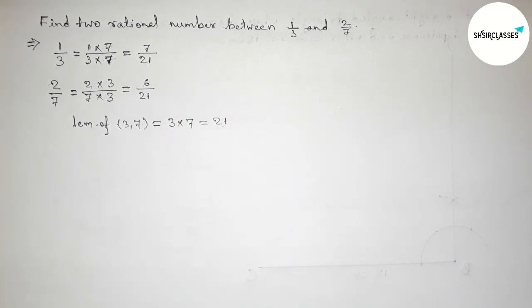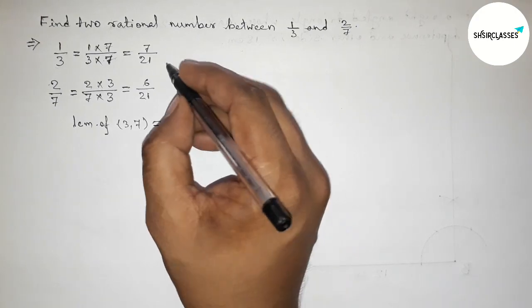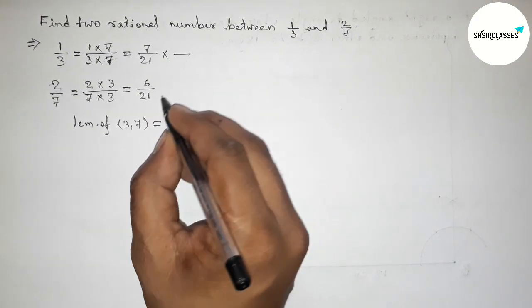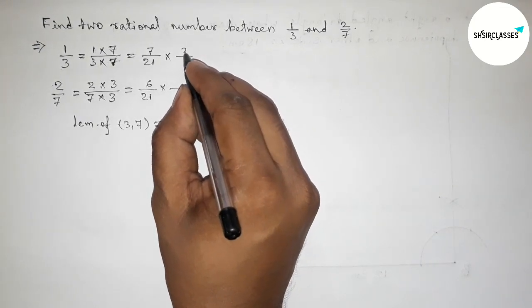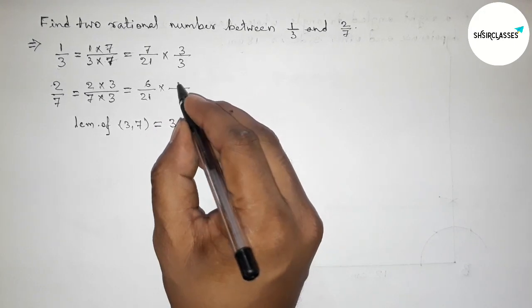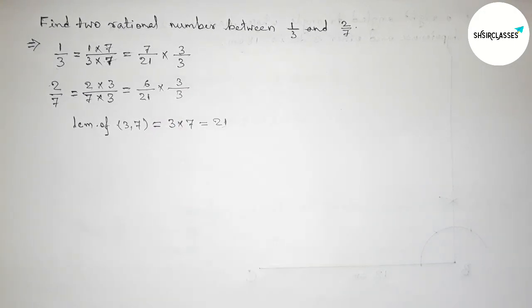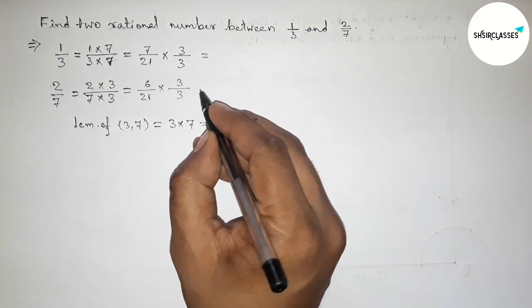Next we have to find two rational numbers, so again we have to multiply both numbers by a number. Choosing here a number 3 up and down, so putting here 3 up and down.